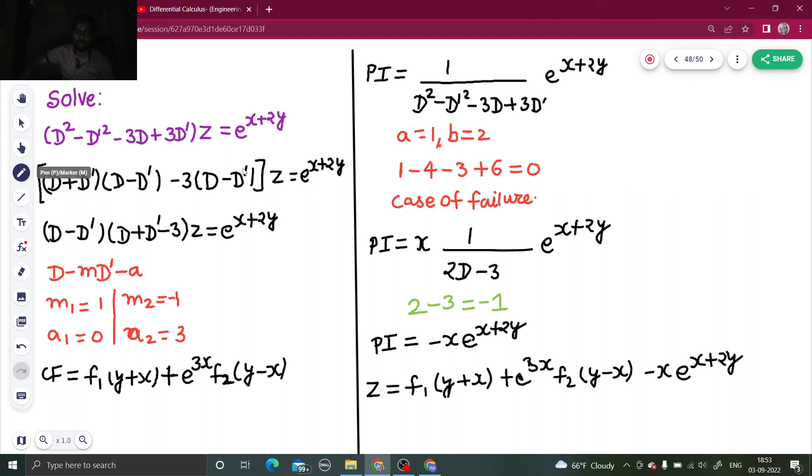Finally, z equals to cf plus pi is your answer. That's it from my side. Do watch my partial differential equation playlist. Thanks and have a nice day.